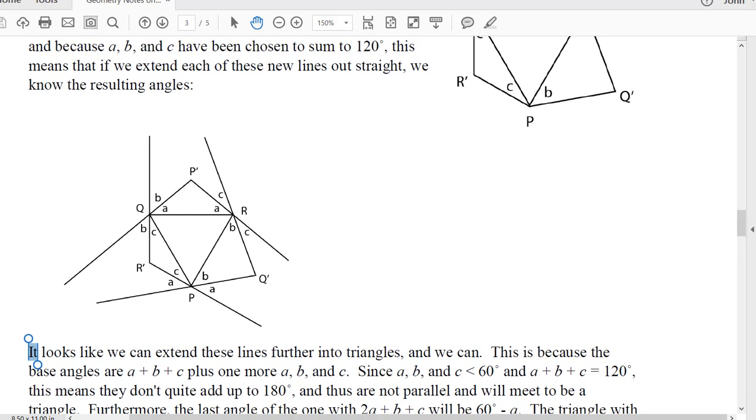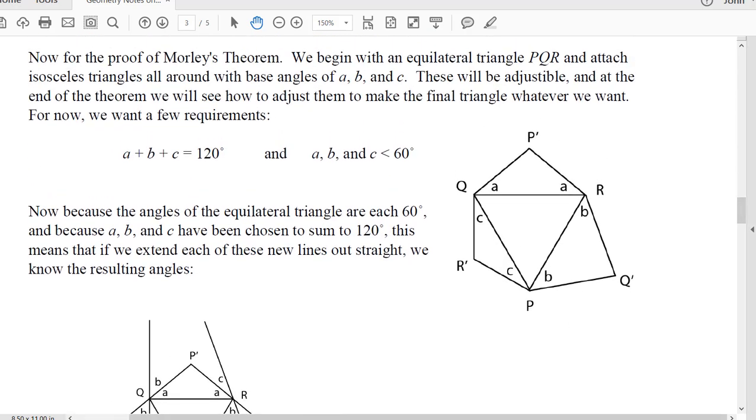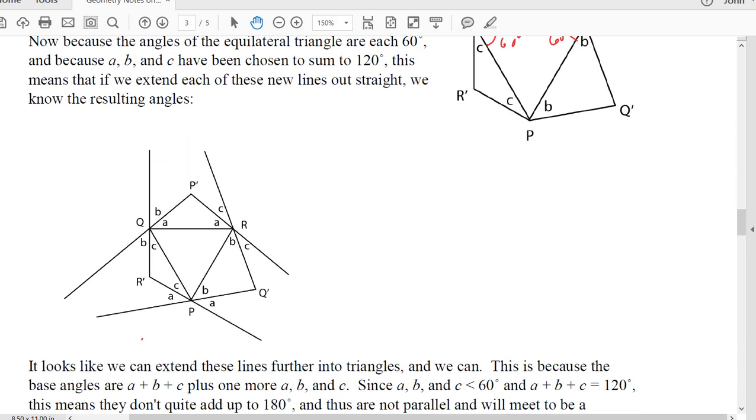Okay, the cool thing is that because A plus B plus A plus B plus C is 120 degrees, it means that if we extend this line out that this is 60 degrees and then A plus B plus C is 120, now that makes 180 degrees to make a right triangle, that means that this angle is B. And similarly, if we extend this line out, this is 60 degrees, A, B, C makes the 120. So we do that and we get all these angles around here.